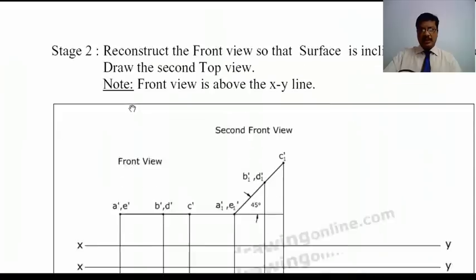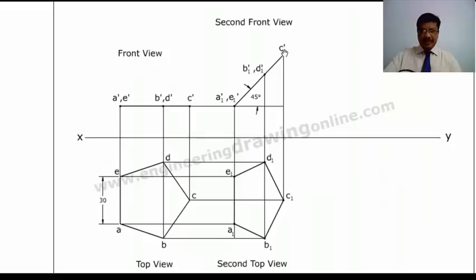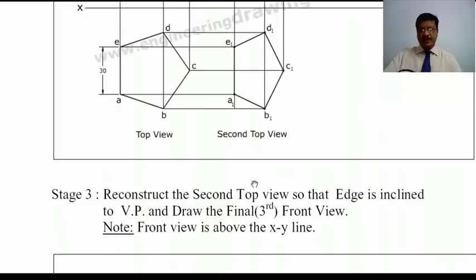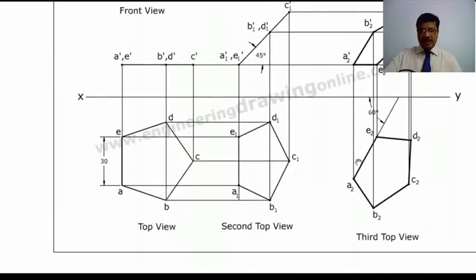As usual, in the second stage you have to tilt the surface. To represent the surface inclination, tilt the front view, then you get the reduced shape in the top view. Then represent the edge inclination by reconstructing the top view to 60 degrees, drawing the projectors and locus lines from the previous front view to get the final front view. The shape in the final stage obtained in the first case and second case is the same. The only difference is that in the second case, edge A-E will not touch the XY line — it will be some distance away.